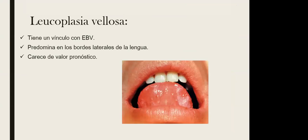El virus herpes tipo 4, o de Epstein-Barr, puede provocar lo que se conoce como leucoplasia vellosa. Es una lesión blanquecina de consistencia de pelusa que predomina principalmente en los bordes laterales de la lengua. Esta carece de valor pronóstico, es decir, se puede presentar en pacientes cuya infección está empezando o en estadios más avanzados.